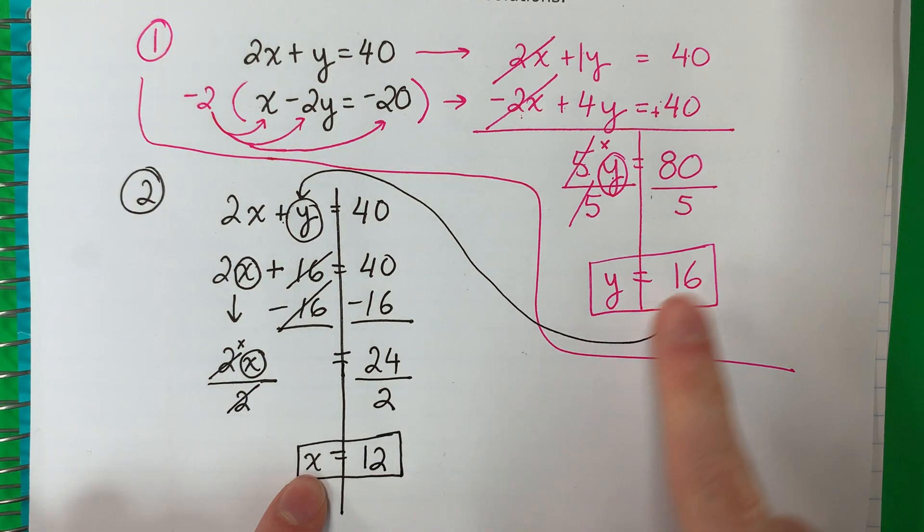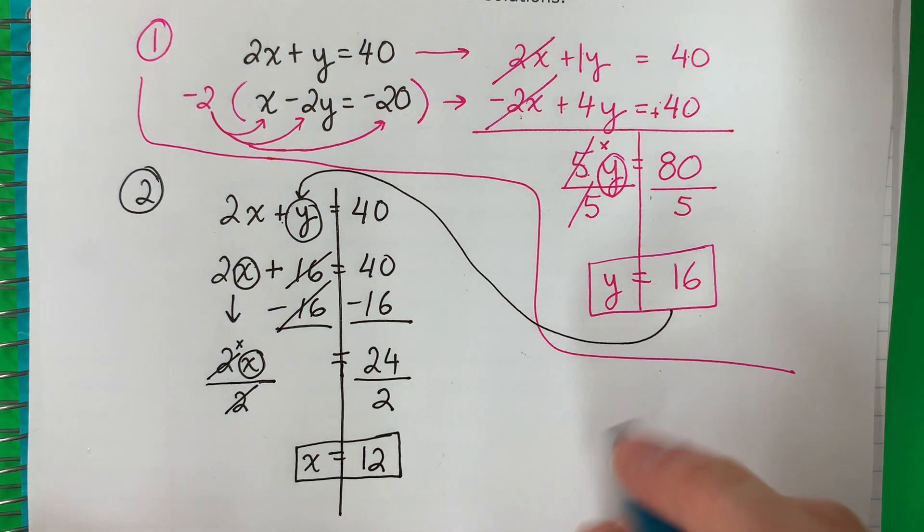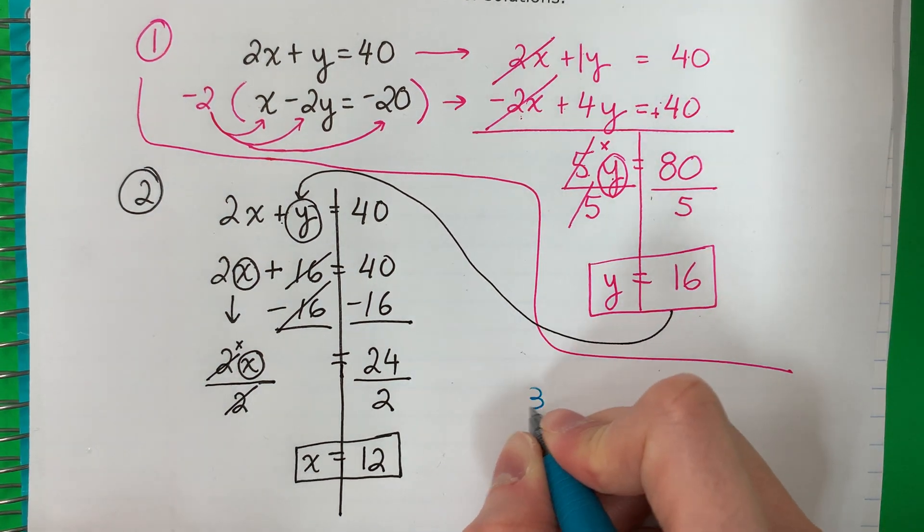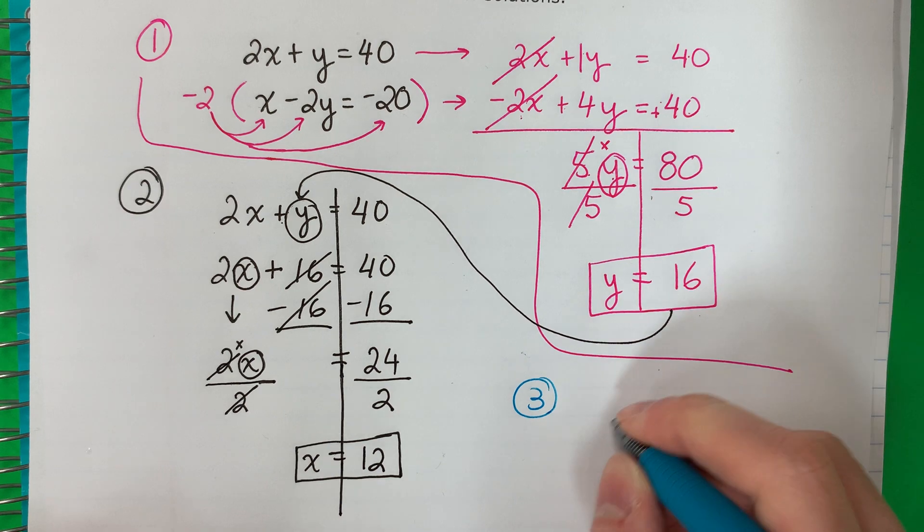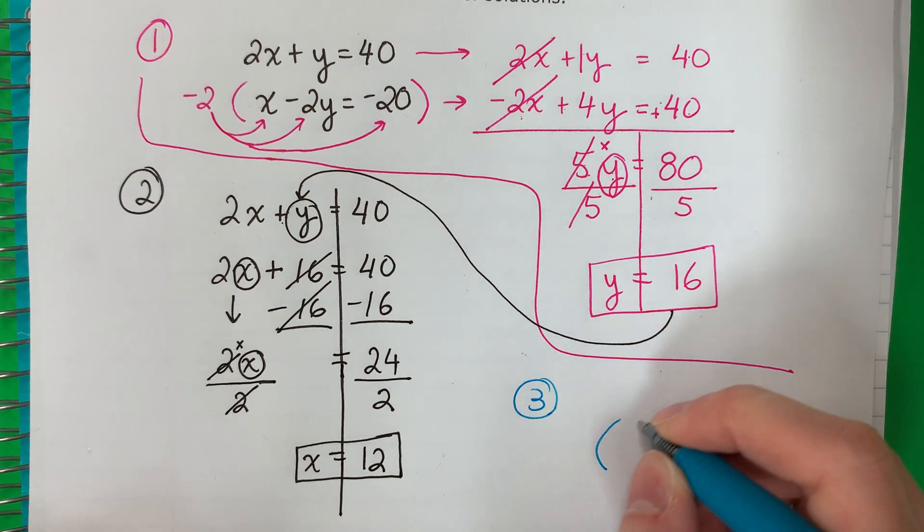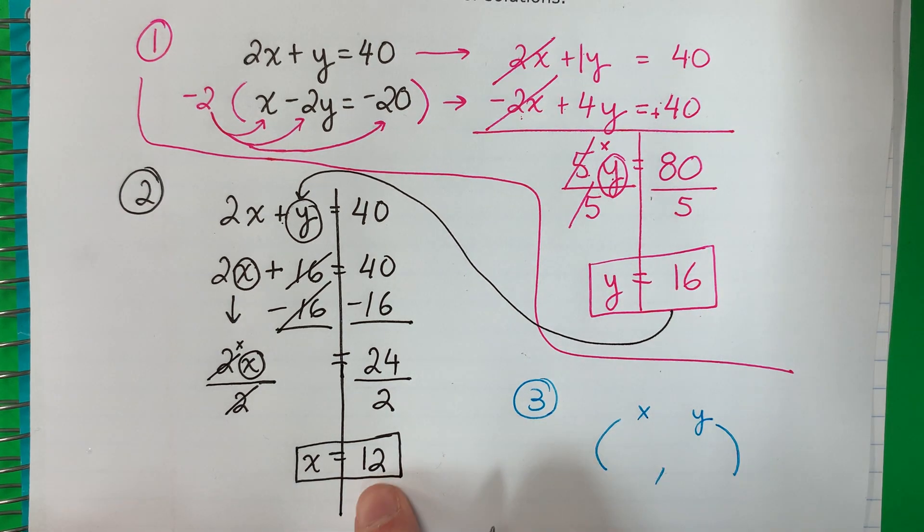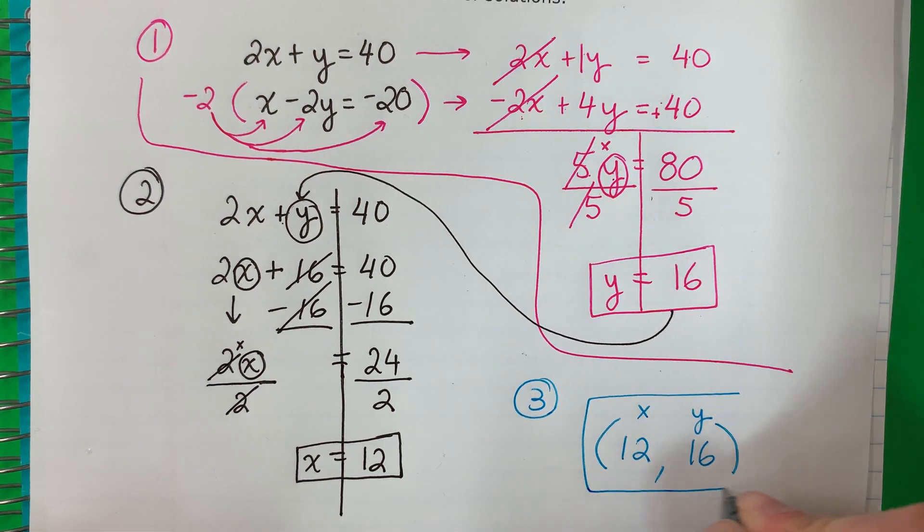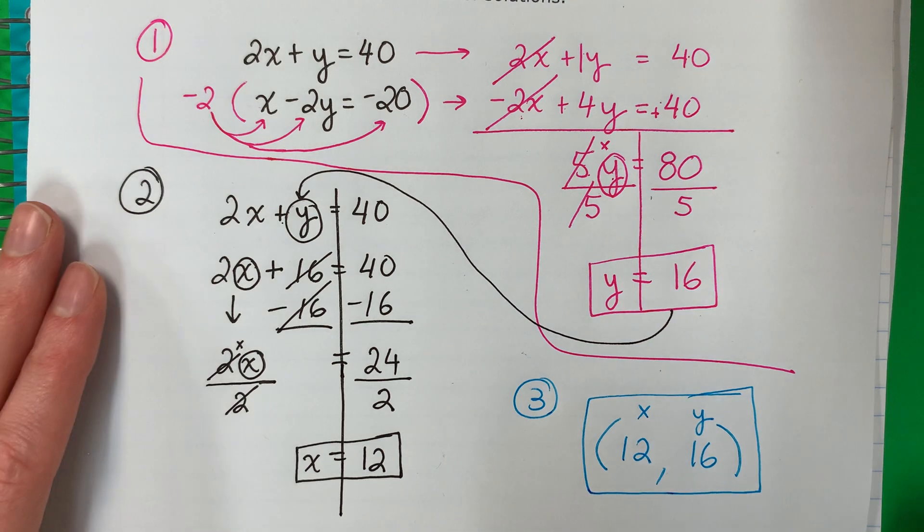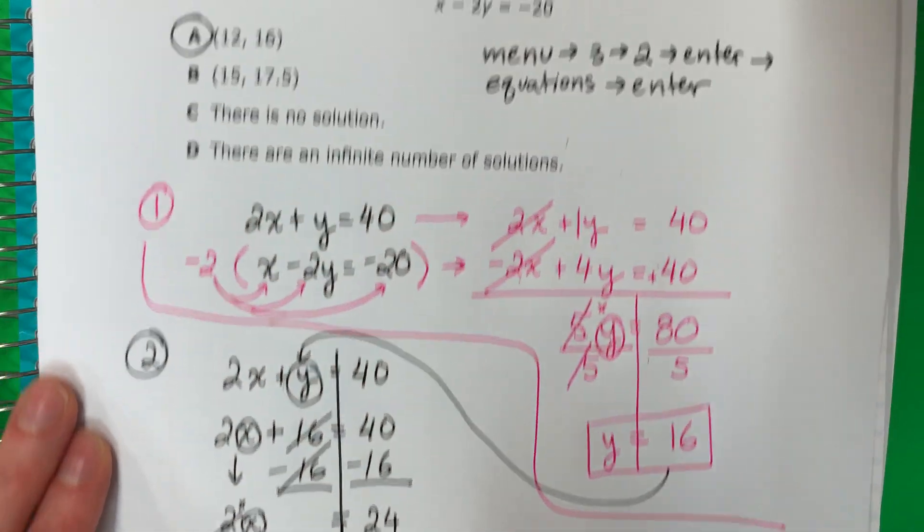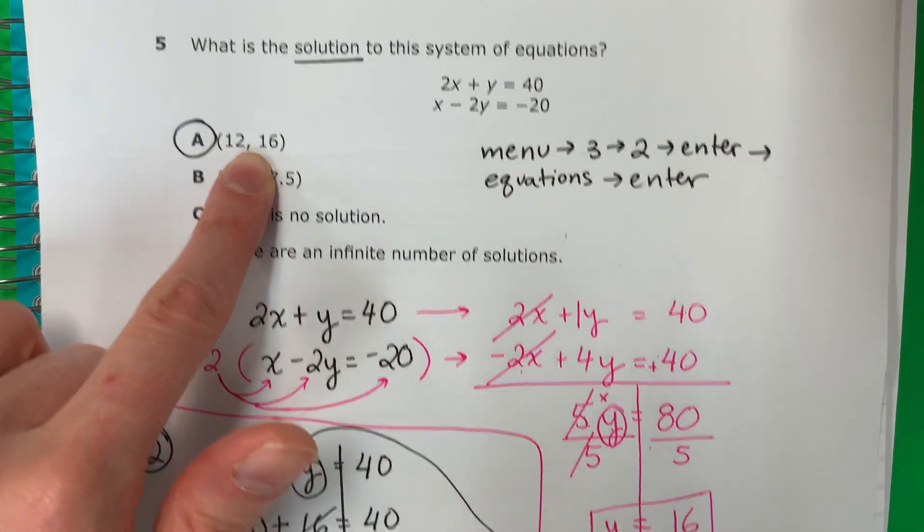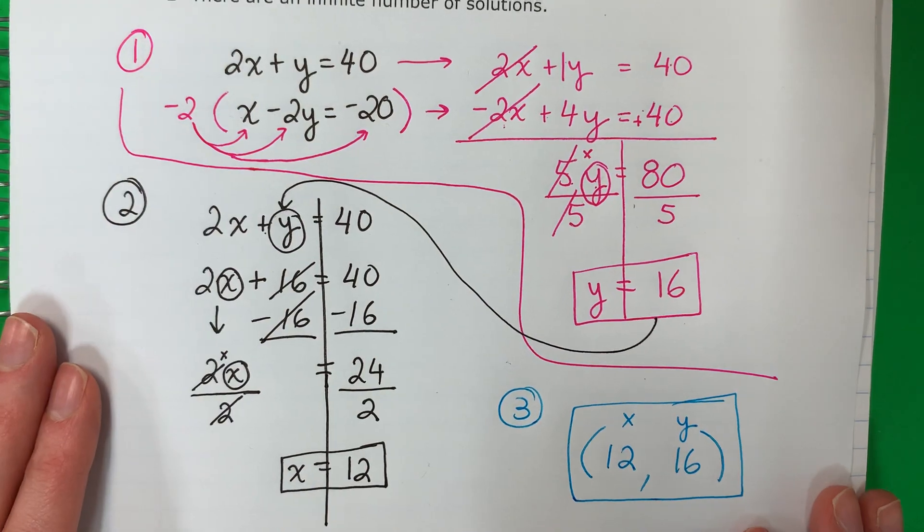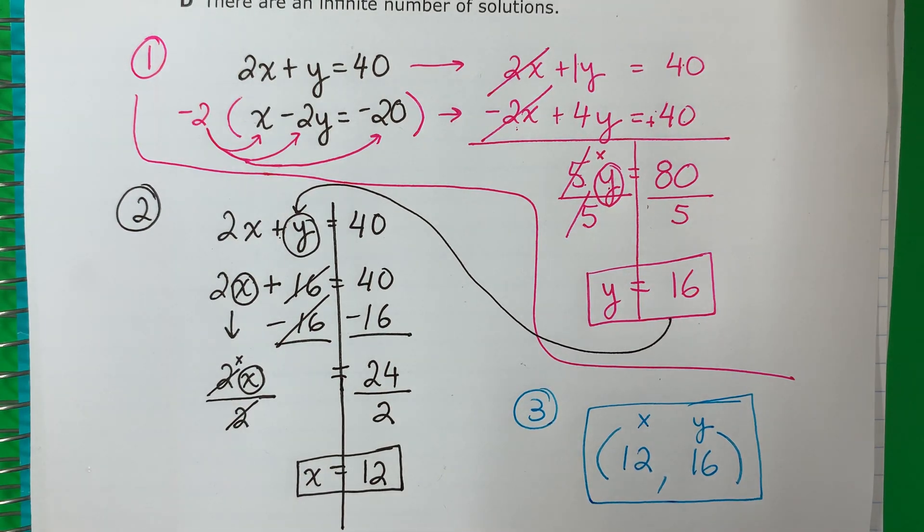So I have x and y. Part 3. I'm going to go ahead and do an ordered pair. x, y. x is 12. y is 16. This is my solution. And this is what the calculator told me. Right? So please subscribe and leave a comment. Thank you.